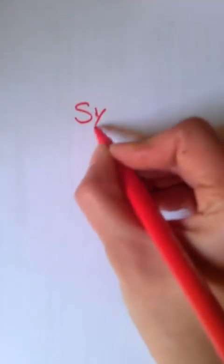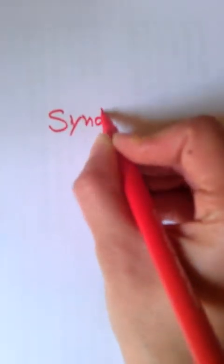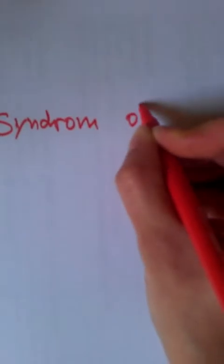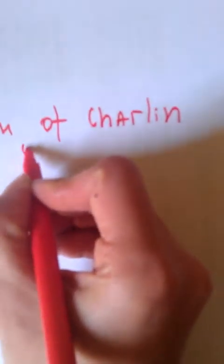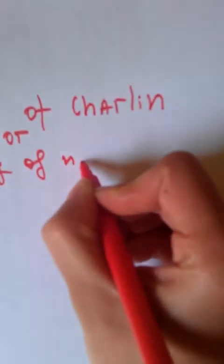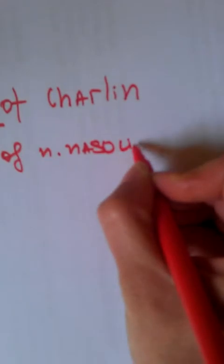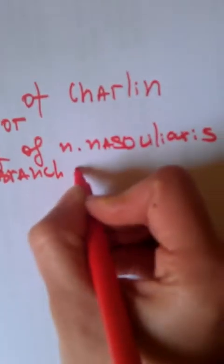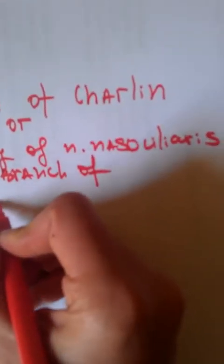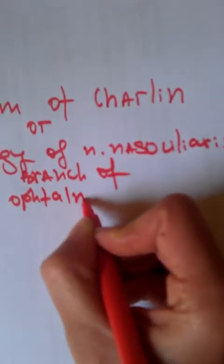In neurology, it is Syndrome of Charlin, affecting neurology of Nervus Nasociliaris branch of Nervus Nasociliaris.